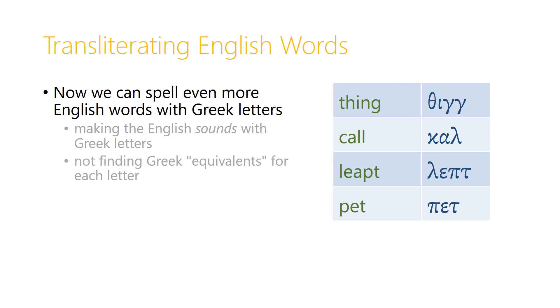The word call we might spell in Greek letters with a kappa, an alpha, and a lambda at the end, which would sound like call. And the English word lept, we could write in Greek letters with lambda, epsilon, p, and tau. And the word pet we could write with p, epsilon, tau.